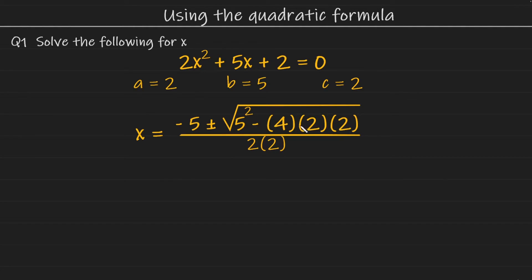Here I have brackets between my 4 times a times c, and that's just another way of writing multiplication. And on the bottom where we had 2a, I have 2 multiplied by 2. Now if you were to put this in the calculator looking as it is, the calculator will give you the correct answer. However, if you don't have a calculator, you can proceed as follows.